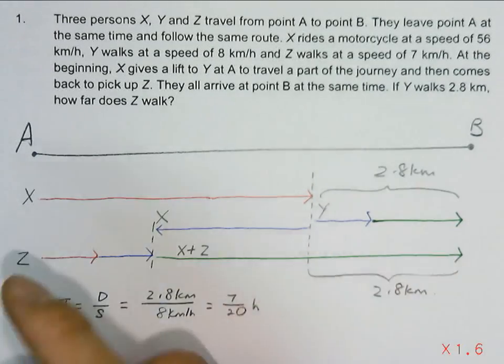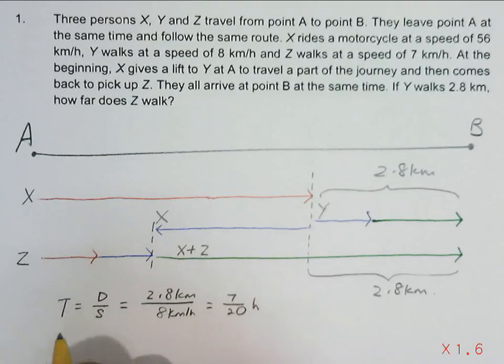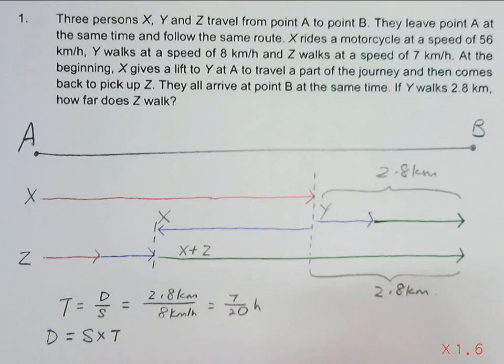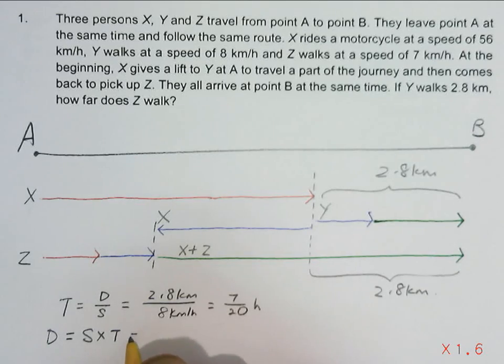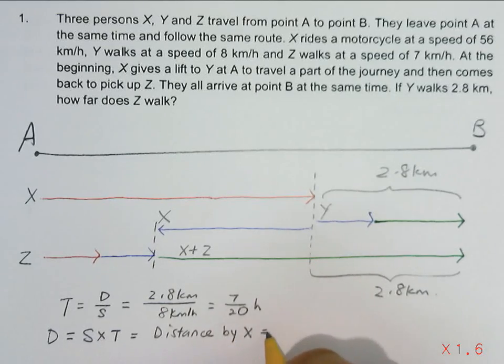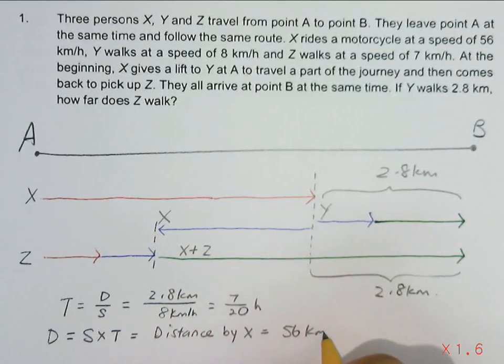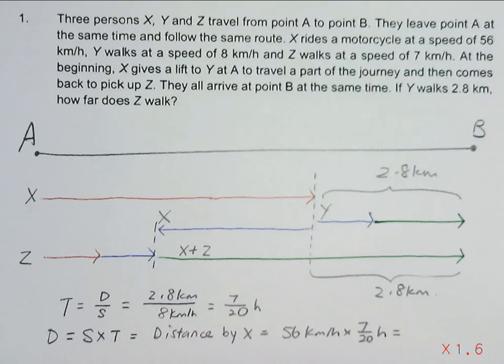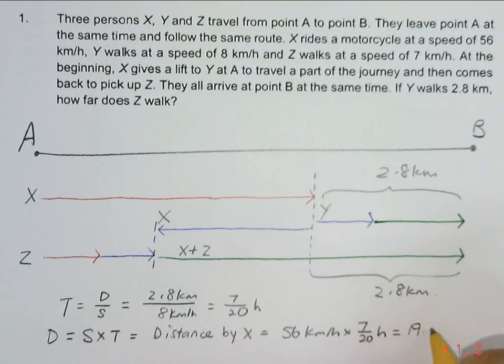So if we follow this time to find the distance, because distance is speed times time, this will give us the distance traveled by X. So the distance traveled by X would be 56 km per hour times 7 over 20 hour, which gives us 19.6 km.